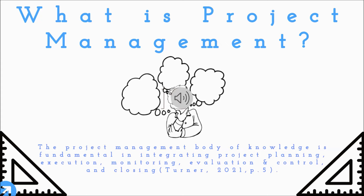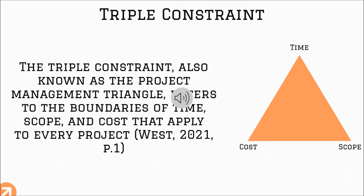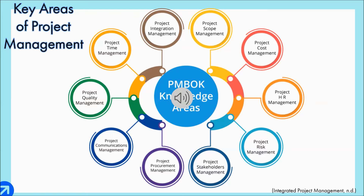What is project management? In the simplest terms, the Project Management Body of Knowledge (PMBOK) is fundamental in integrating project planning, execution, monitoring, evaluation, control, and closing. There are three components to project management known as the triple constraints, which apply to the management triangle. This refers to the boundaries of time, scope, and cost that apply to each and every project.